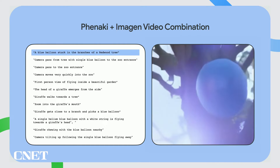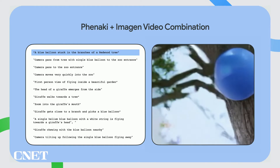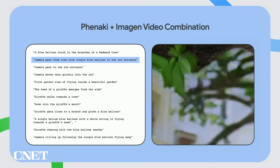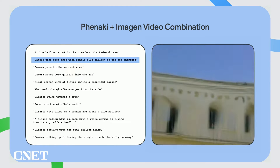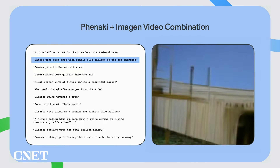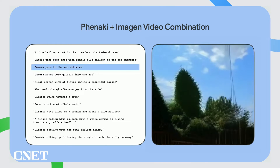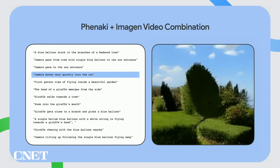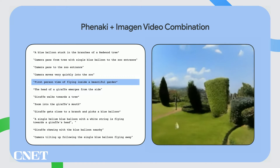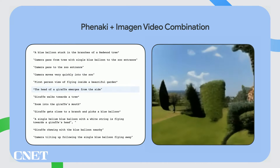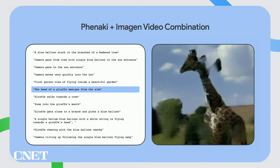A blue balloon stuck in the branches of a redwood tree. Camera pans to the zoo entrance. Camera moves very quickly into the zoo. First person view of flying inside a beautiful garden. The head of a giraffe emerges from the side.